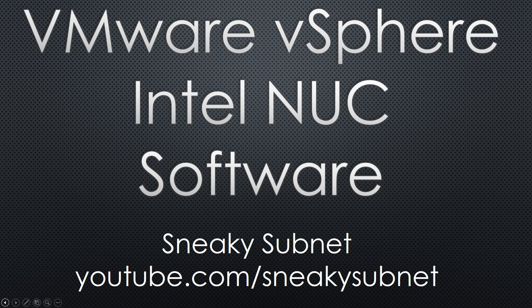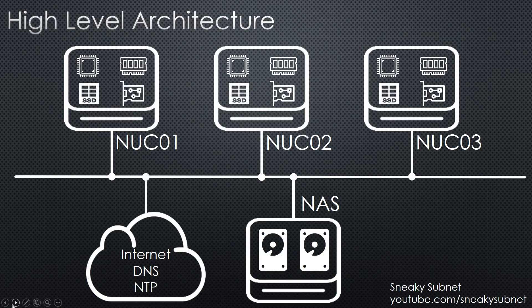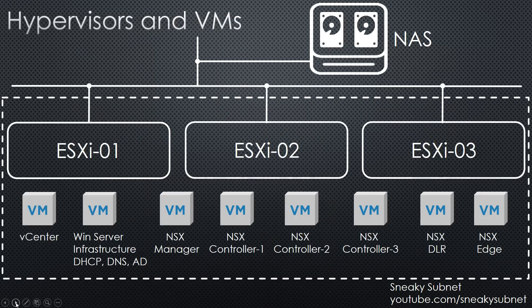First, let's refresh the high-level architecture. I have three physical nodes, a NAS appliance, and obviously a network. Here is the same schema from the vSphere standpoint. Each NAC node is an ESXi host, and at the bottom of the slide you can see various virtual machines which I need in order to deploy vSphere itself and also NSX.